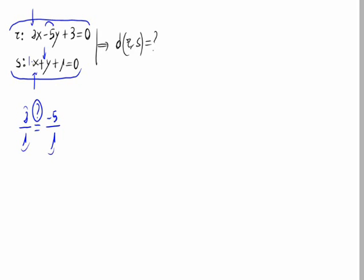As we can see, this is not equal because 3 times 1 is not the same as 1 times minus 5. So this means that these straight lines are secant, I mean, they cross themselves in a point.